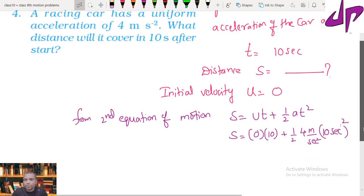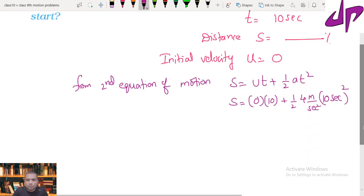Now let's simplify this to get the final result. Therefore s equal to 0 times 10, we can get 0 only, plus half times 4 meter per second squared times 10 squared equal to 100 second squared. Also it becomes